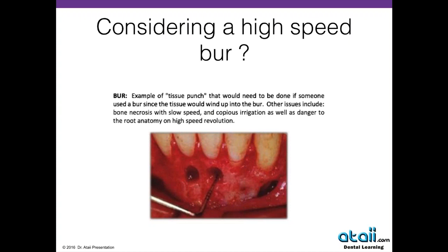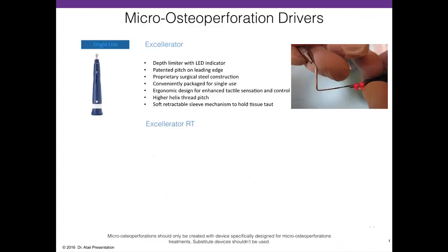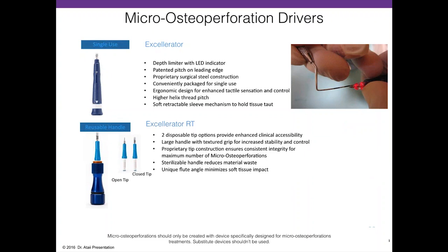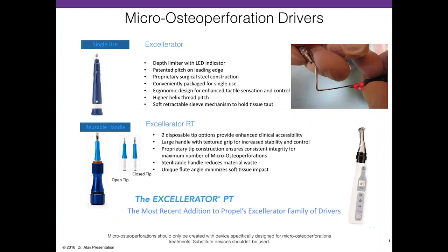I prefer the delivery devices in the market. There's the Propel Accelerator for micro-osseous perforation — a single-use device with a light at the end that signals when you've reached the designated 3mm or 5mm depth. There's also a reusable handle with disposable tips. I like the open tip — it allows smaller perforations, closer to 3 to maximum 5mm depth. Currently I've been using the Accelerator PT, which is a power-driven handpiece with small tips — I don't have to twist my hands.